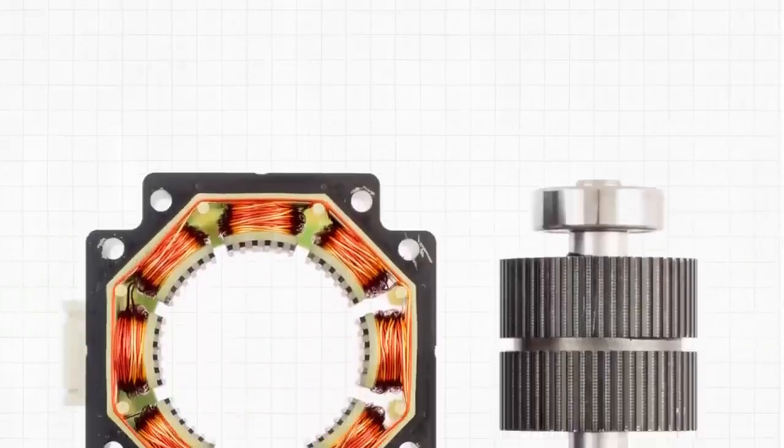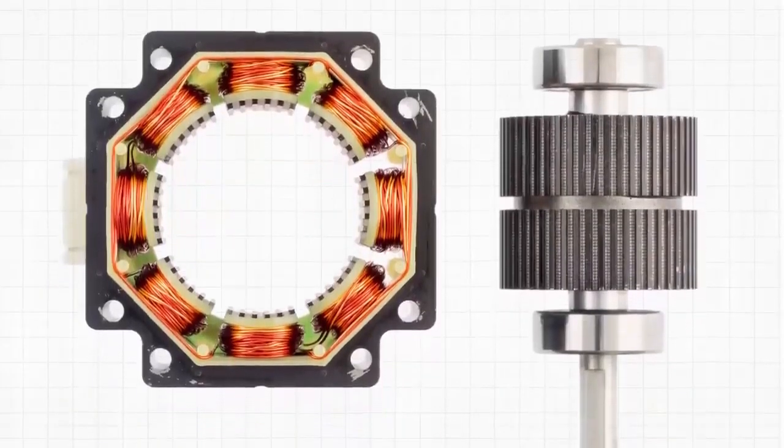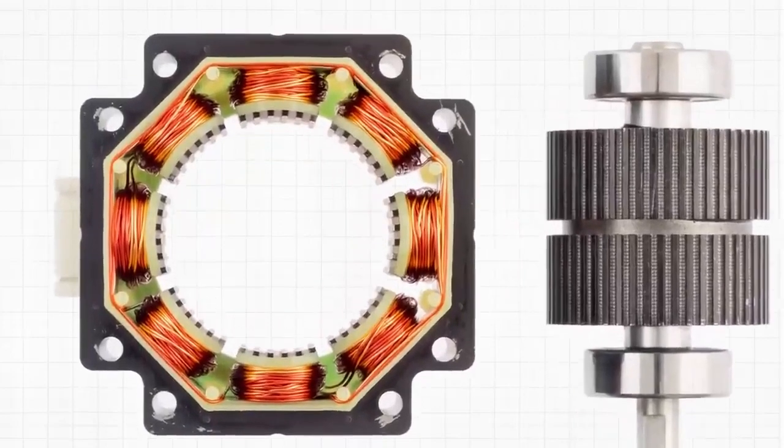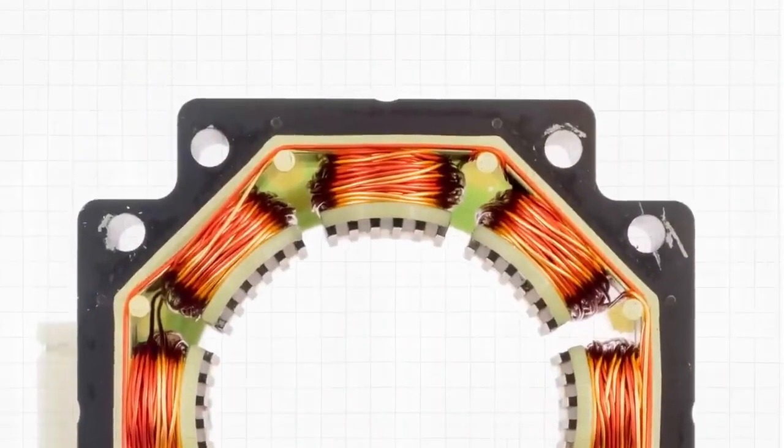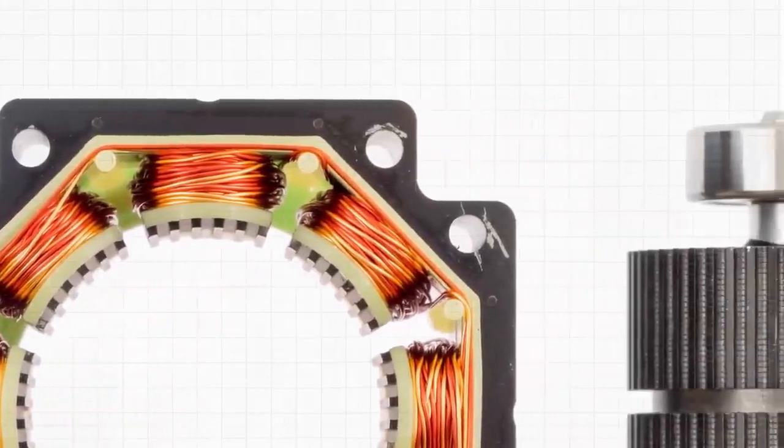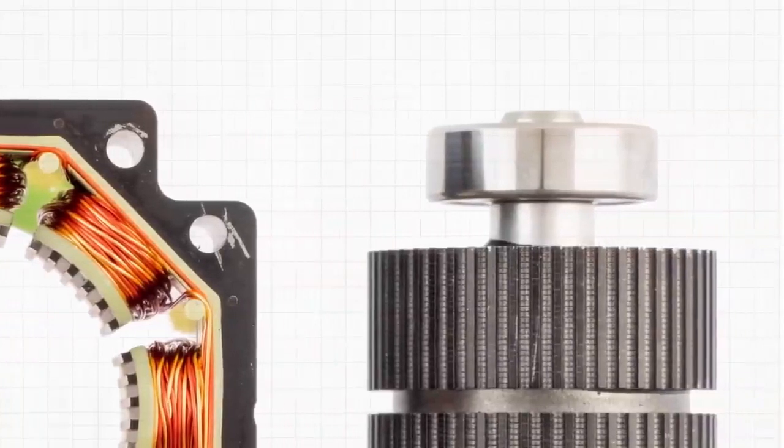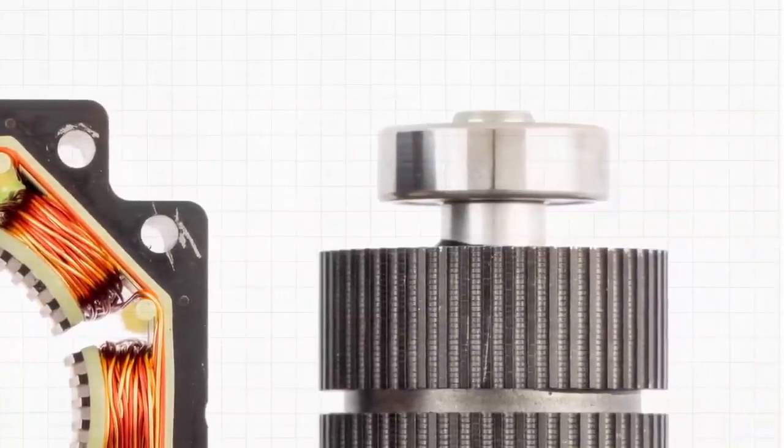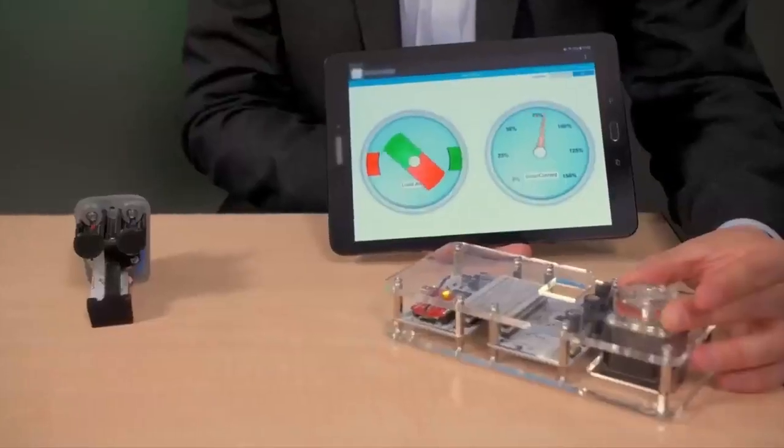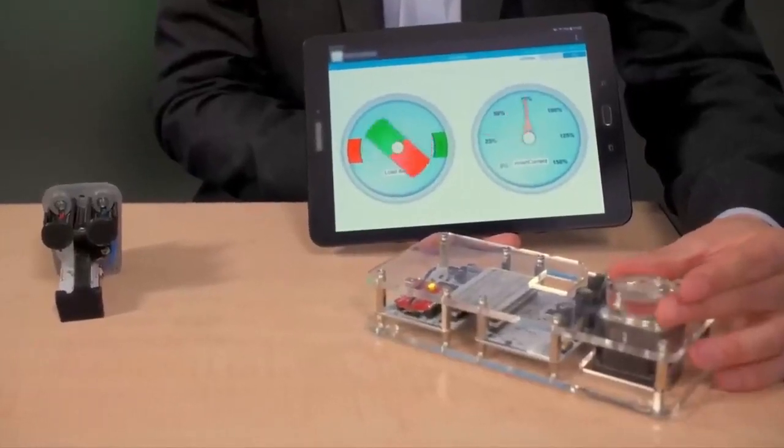The rotor is multi-toothed as in a variable reluctance motor and contains an axially magnetized magnet concentric with its shaft. Teeth on the rotor provide a path to help guide the magnetic flux to preferred locations in the air gap. This further increases the detent, holding, and dynamic torque characteristics of the motor when compared with the other two step motor types.